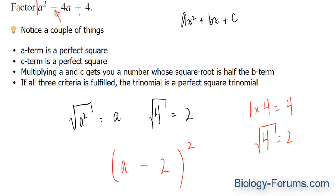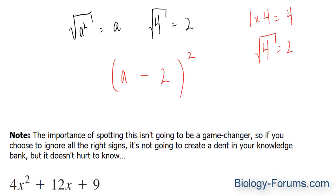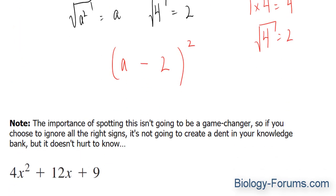There you have it. That is how you factor a perfect square trinomial. The importance of spotting this isn't going to be a game changer. So if you choose to ignore all the right signs, it's not going to create a dent in your knowledge bank, but it doesn't hurt to know.